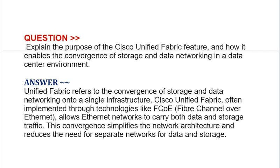Our next interview question is: explain the purpose of the Cisco Unified Fabric feature and how it enables the convergence of storage and data networking in a data center environment. Unified Fabric refers to the convergence of storage and data networking onto a single infrastructure. Cisco Unified Fabric, often implemented through technologies like FCoE — Fibre Channel over Ethernet — allows Ethernet networks to carry both data and storage traffic. This convergence simplifies the network architecture and reduces the need for separate networks for data and storage.